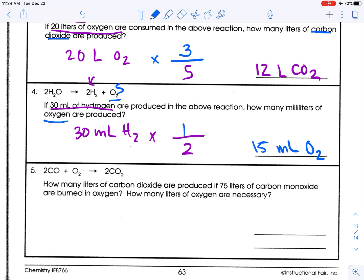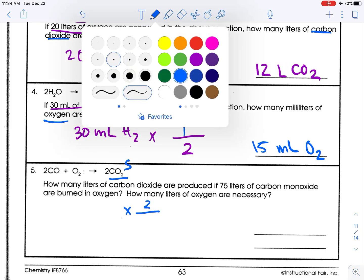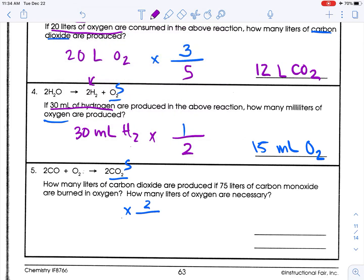Last one. How many liters of carbon dioxide? So carbon dioxide is what I seek, are produced if 75 liters of carbon monoxide are burned. So I seek the 2. What do I know? I know carbon monoxide. So 75 liters of carbon dioxide. So take a look, 75 times 2 divided by 2, that's the same, it's multiplying by 1. So my first answer is 75 liters of carbon dioxide.